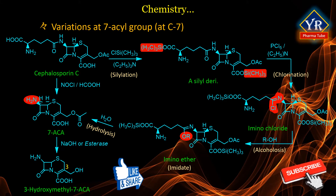Another procedure involves the use of anhydrous formic acid rather than water as the solvent, and nitrosyl chloride as the diazotizing agent; followed by hydrolysis of the intermediate, this procedure results in 7-ACA. More recently, the discovery of acylase enzymes and their utilization in immobilized form produced usable enzyme technology for cleavage of the C7 side chain. Deacetylation of 7-ACA to 3-hydroxymethyl-7-ACA can be achieved with cold aqueous sodium hydroxide in less than one hour, or on a larger scale enzymatically, as in the synthesis of cefuroxime.